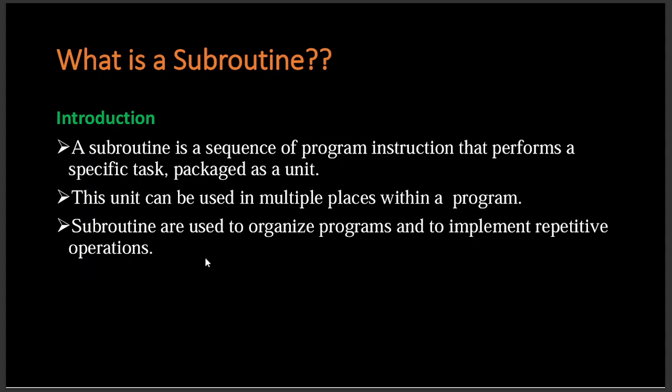In PLC programming, we have two instructions we can use to control the program flow: conditional jump and call instructions. Other than that, you can use a subroutine. A subroutine is like a function or a method in high-level programming languages.